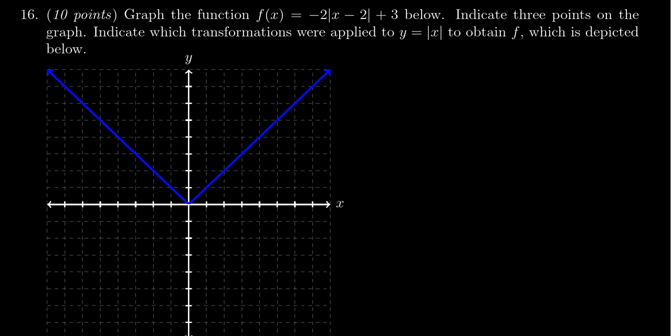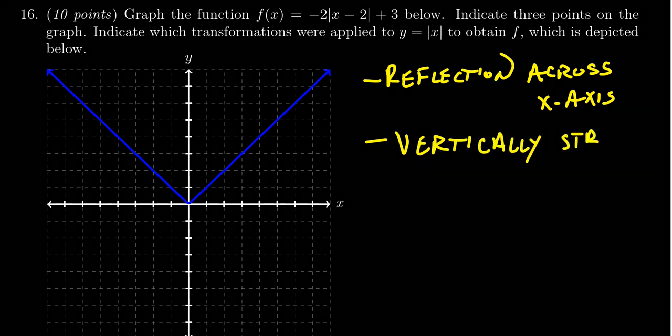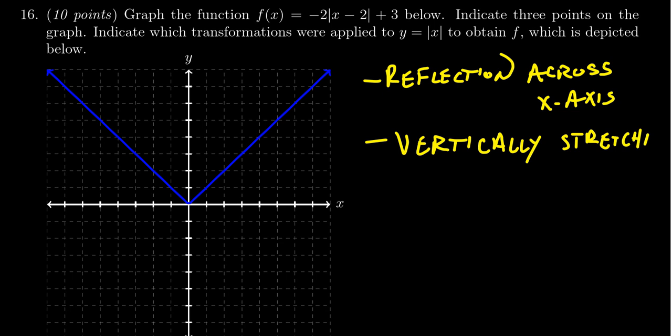Let's illustrate that. Let's write it down. So we actually have a reflection across the x-axis. That's the first transformation. The second transformation is that it was vertically stretched by a factor of two.